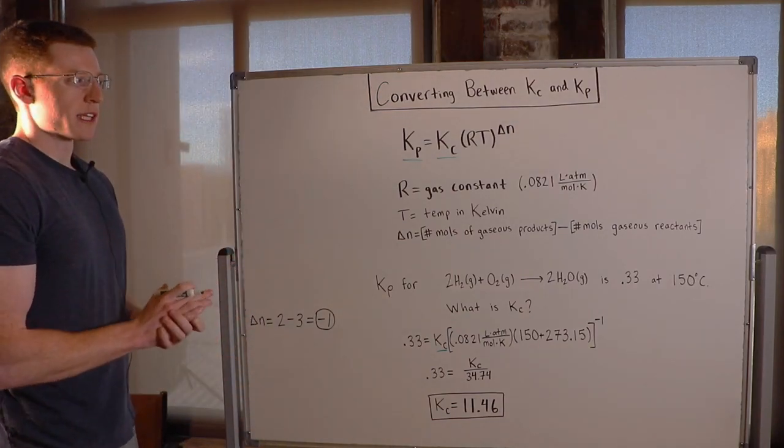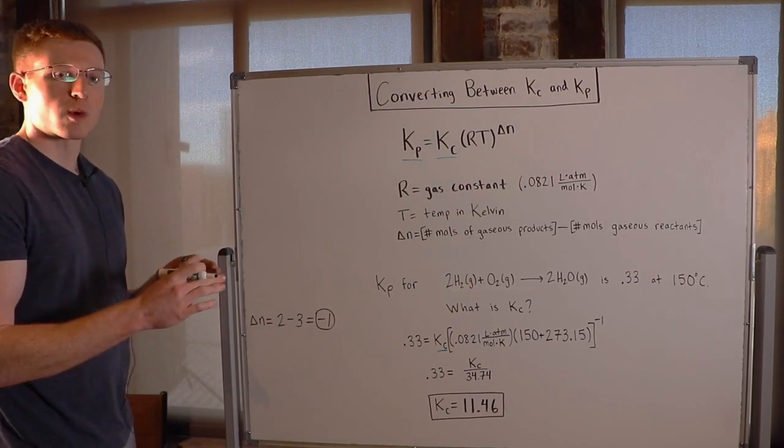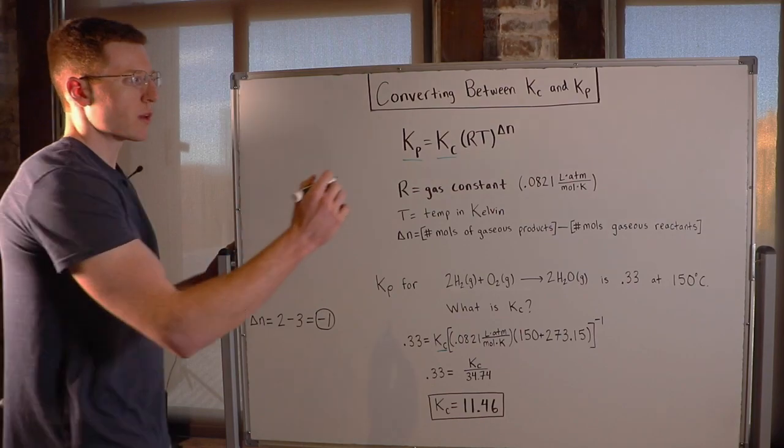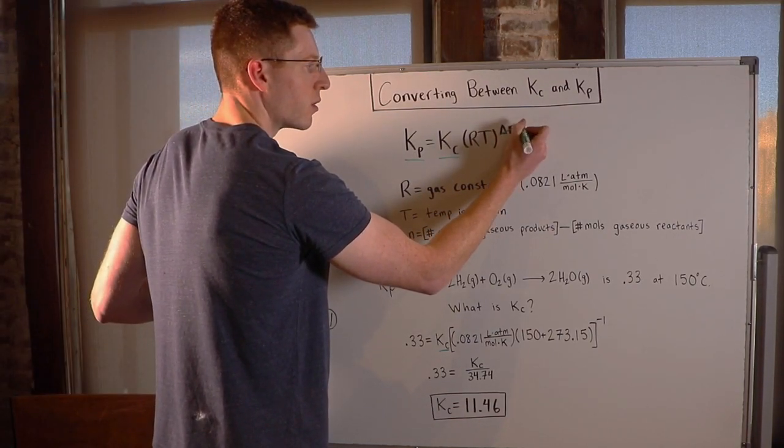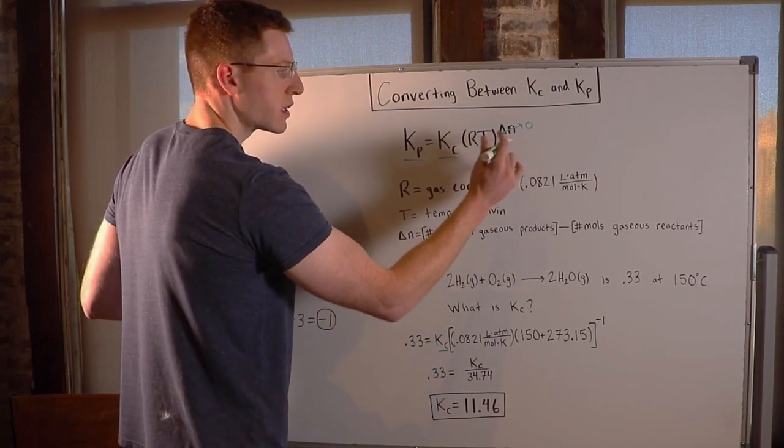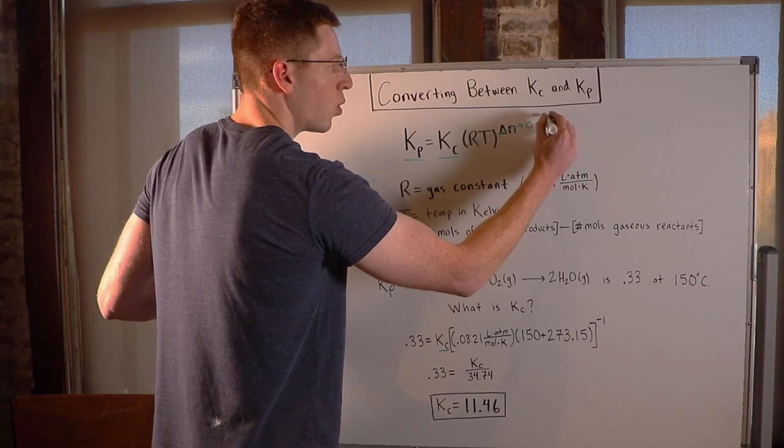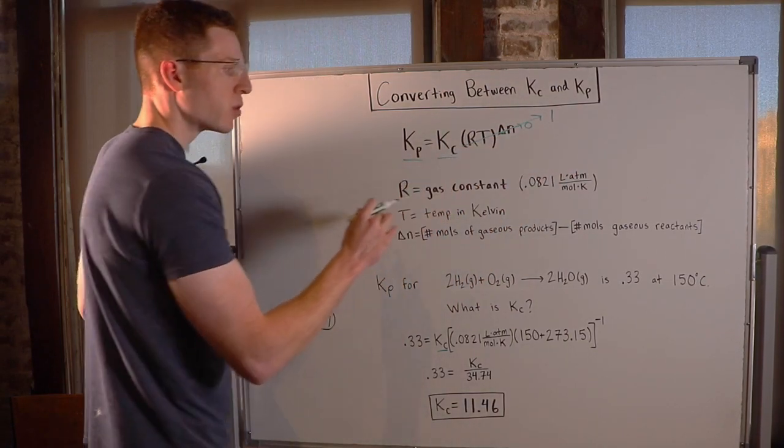One last important case I'd like to discuss is the case where Kp is equal to Kc. So think about when that would occur. Well, think about if delta N were to be zero. If this were zero, well then RT to the zero, anything to the zero power is one. So when delta N is zero, Kp equals Kc.